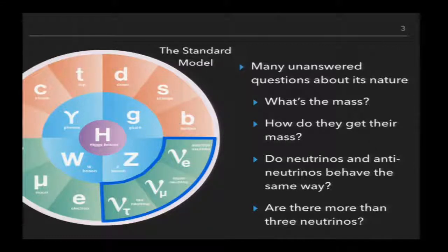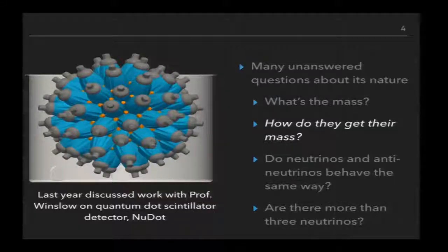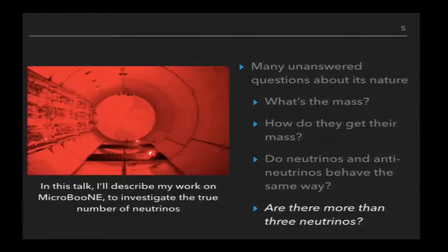So recently we learned that the neutrino has mass. And even though we know that it's a very small mass, we don't know its exact value nor do we understand the mechanism by which it gets its mass. We also want to know if the neutrino and the anti-neutrinos behave in the same way. And over the past several decades, there have been a number of experiments that have shown some anomalies that could be interpreted as hints that there may be more than just these three neutrinos that exist. So last year I talked about this prototype detector called DoDOT. But this year, I decided to change it up a little bit and talk about the other experiment I work on, MicroBoon. And the goal of MicroBoon is to answer this question, are there more than three neutrinos?